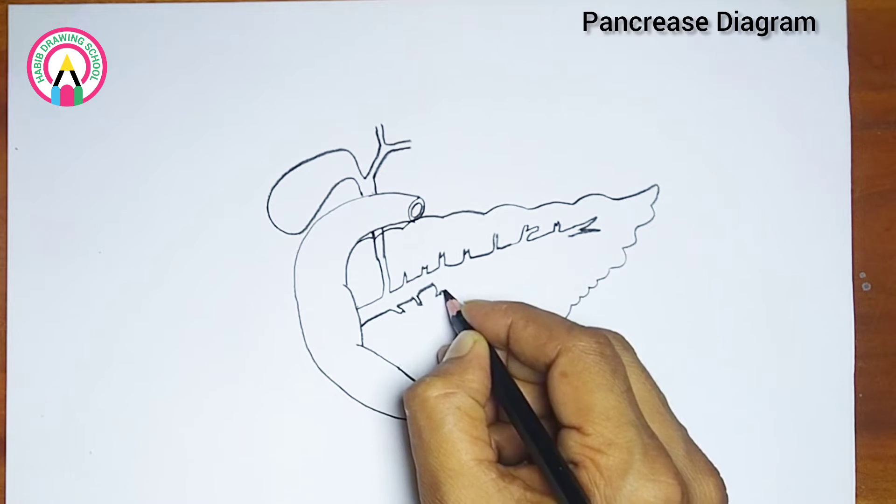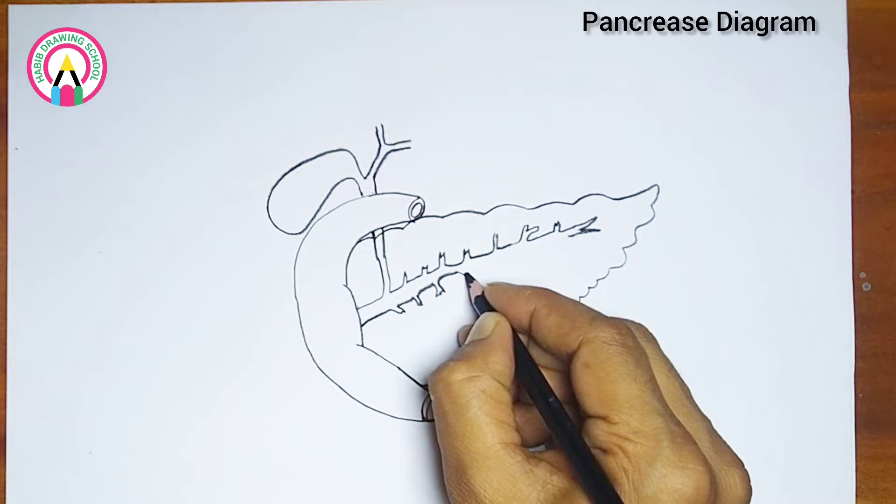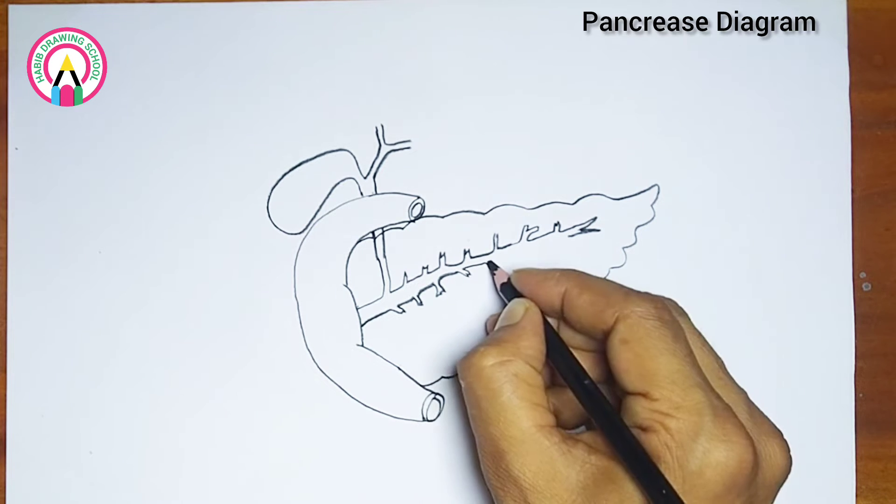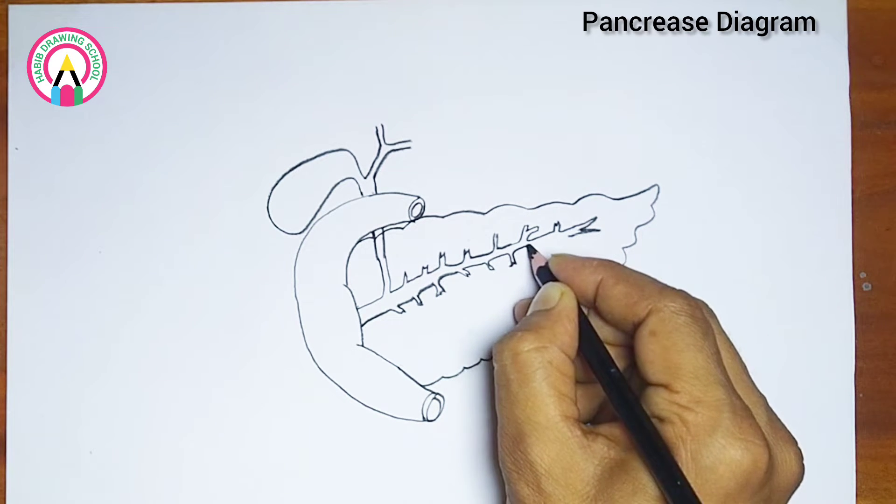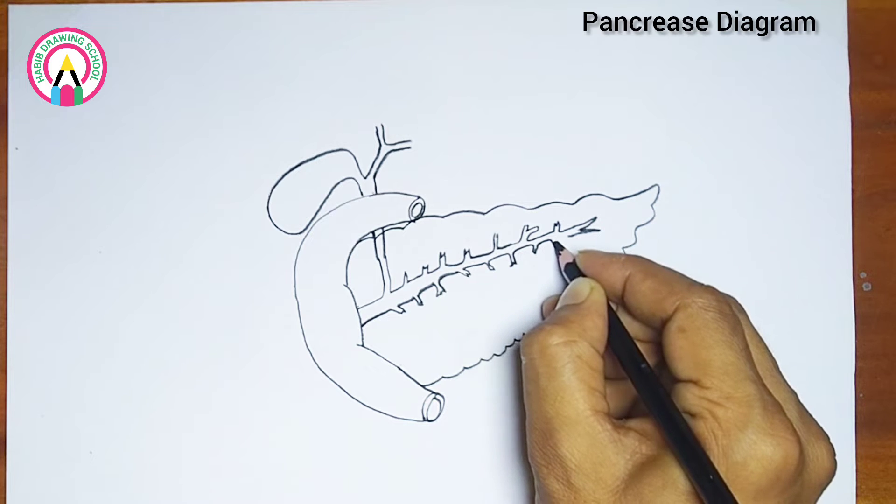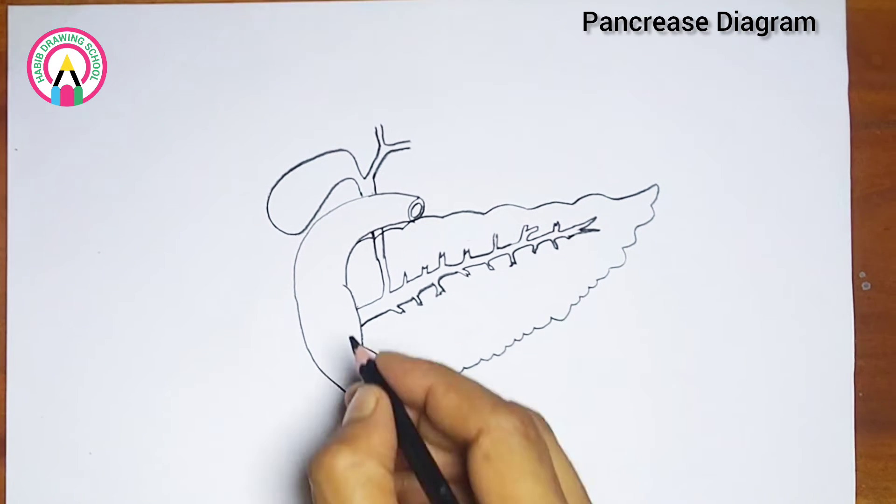The pancreas serves two primary functions. One: endocrine function - the pancreas produces hormones including insulin and glucagon which help regulate blood sugar levels.